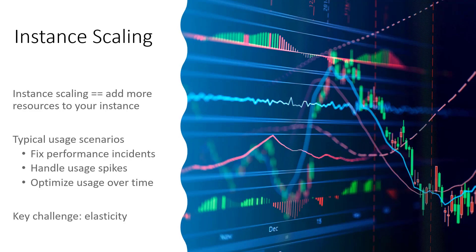Typical usage scenarios when you want to do instant scaling — when you want to add more resources — are: you want to fix a performance incident. When classic troubleshooting techniques such as fixing your query plan do not work, you can always increase the instance resources to temporarily provide relief to a database workload. Other scenarios include usage spikes and seasonality, such as Black Friday, and optimizing usage over time as your data grows or usage changes, so you may need to add more or reduce resources to optimize your costs.